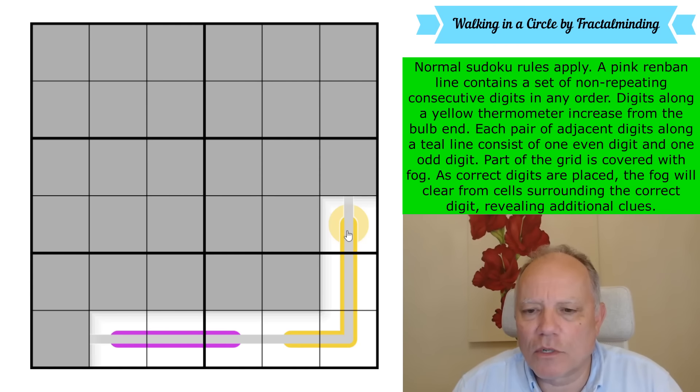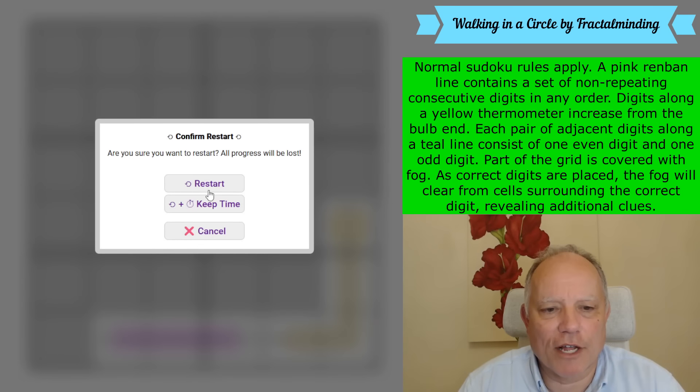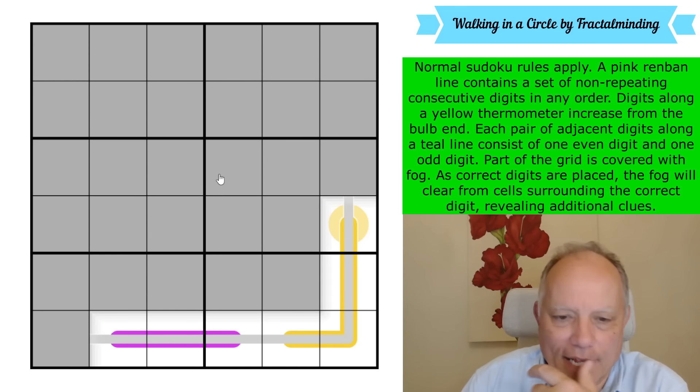Part of the grid is covered with fog, and as digits get placed correctly, the fog will clear from surrounding cells to reveal additional clues. So it's a fog of war in a 6x6. How tough can it be? We will find out. Give it a try on the first link under the video. Watch out for the color of the lines which may change from what you see on my screen. I'm going to try it now. Let's get cracking.